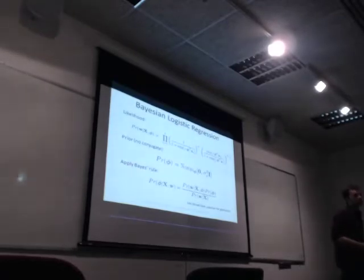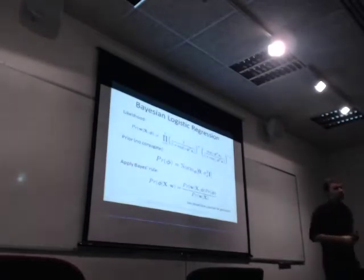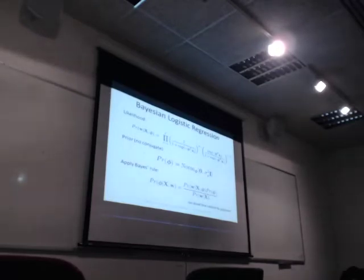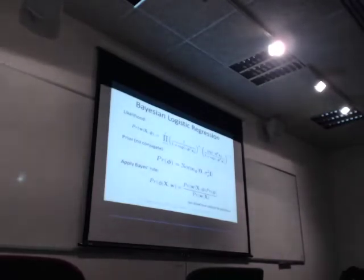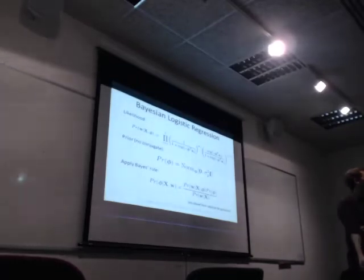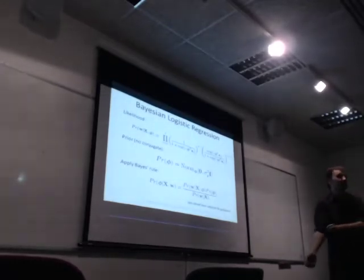A student asked: I thought before when we were using the beta distribution we never had any way of setting alpha and beta. The answer is we would choose them in a kind of ad hoc way — we would say we think it's going to be equal, so alpha and beta equal each other, and they are high or low.